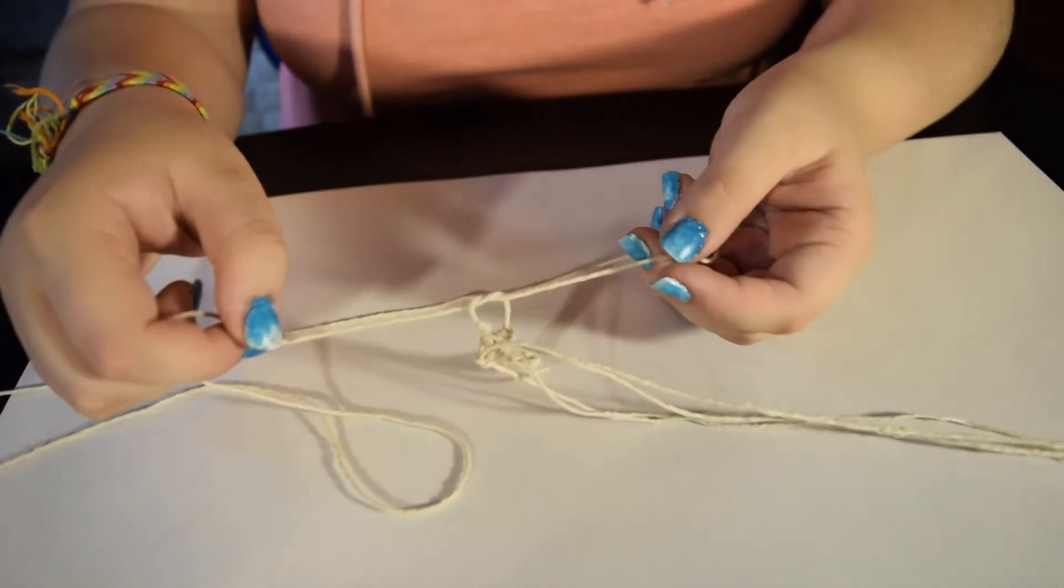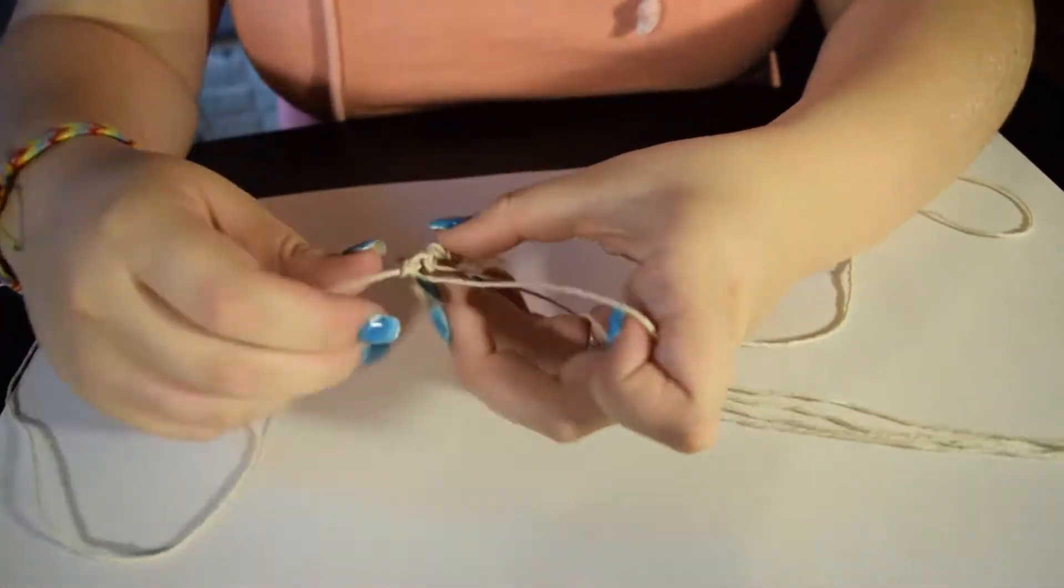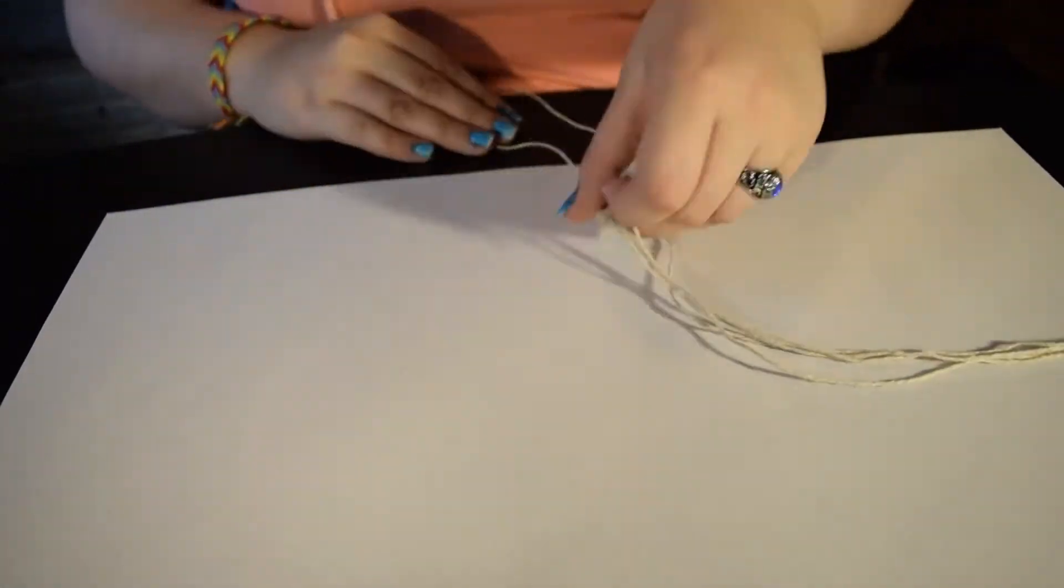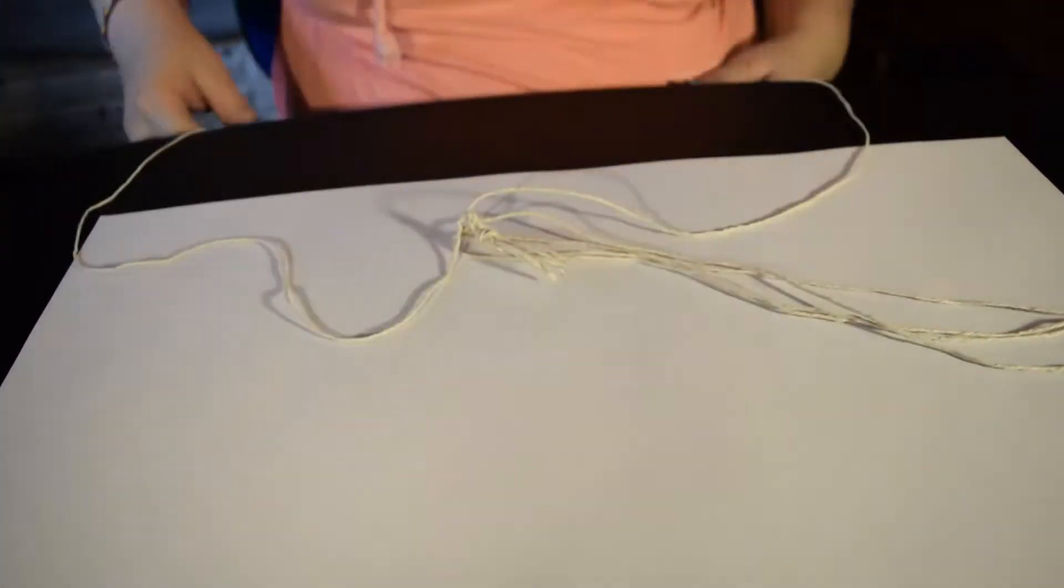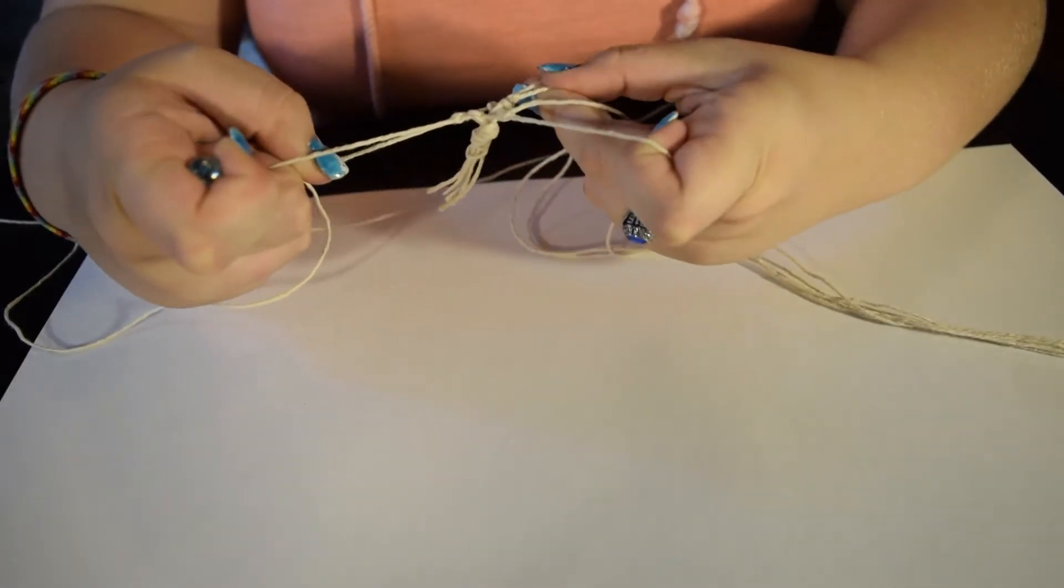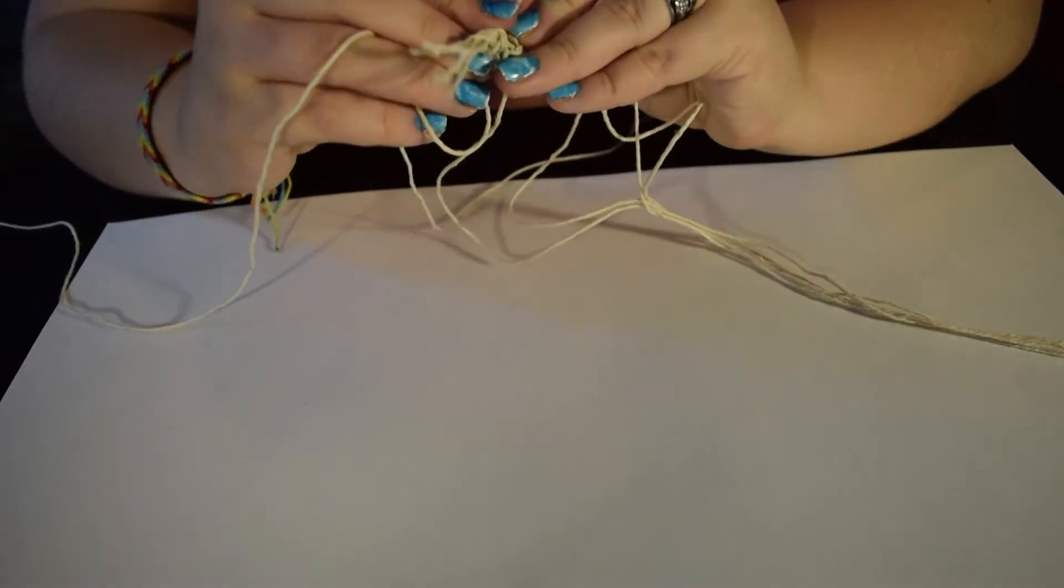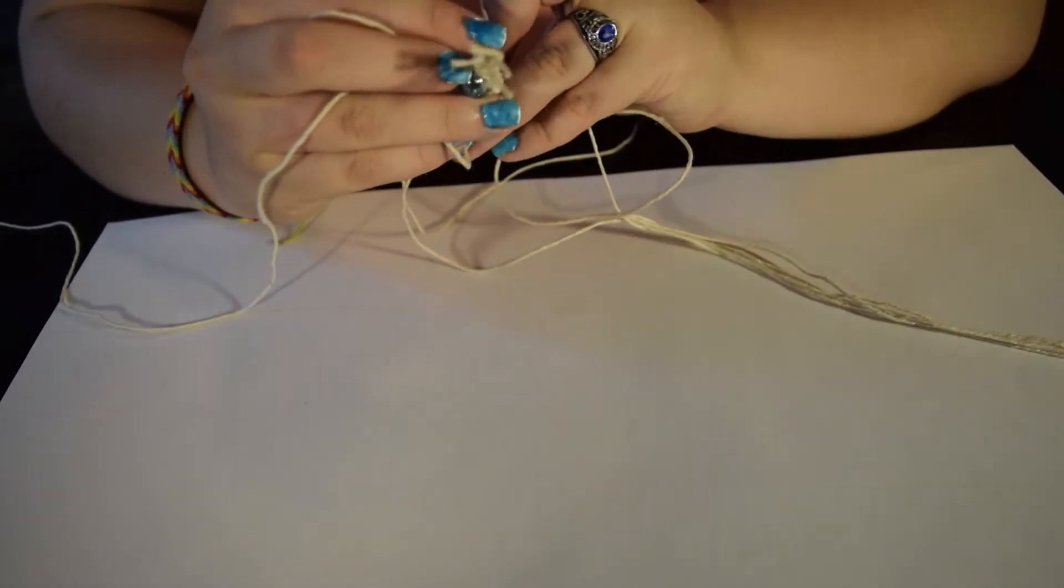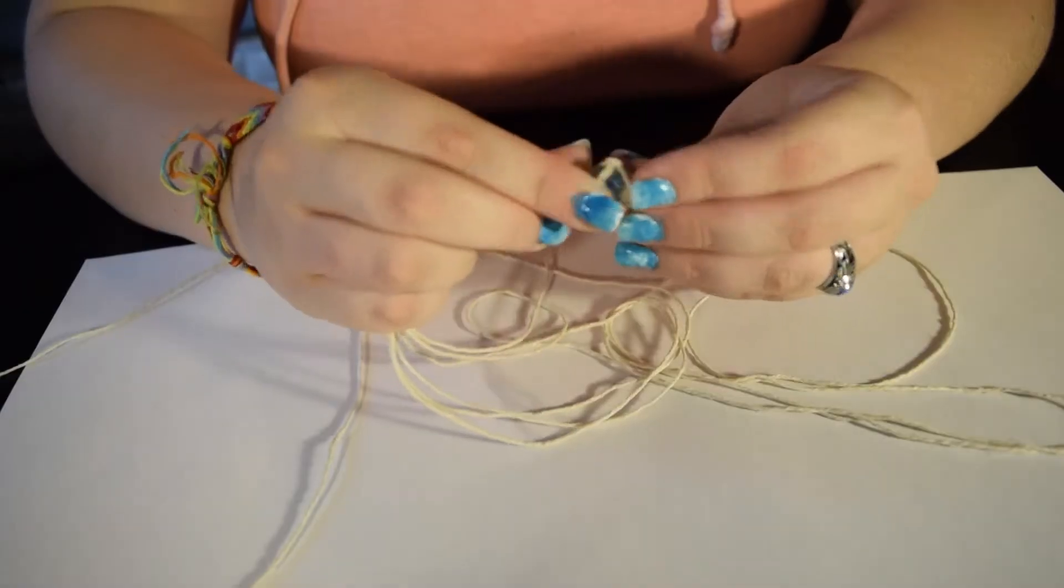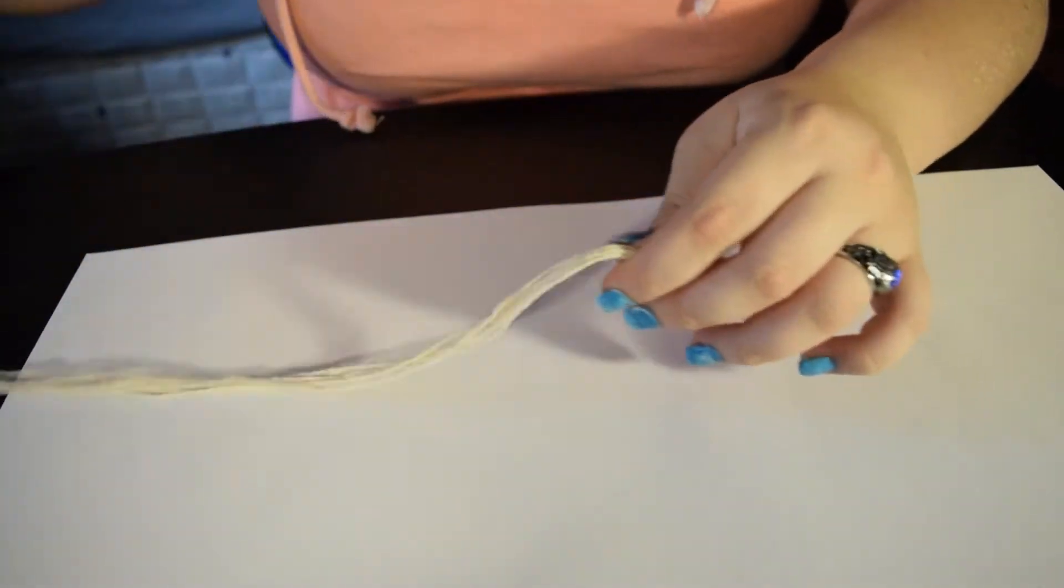While doing the knotting, you might want to check your marble and try to fit it in every now and then, just to make sure that the marble is going to actually fit and you're not making things too big or too small. When you're pretty much done, the knots will end up looking like a basket.